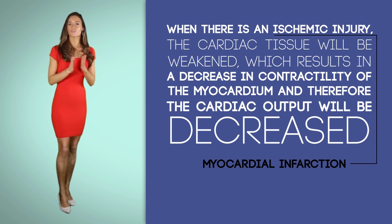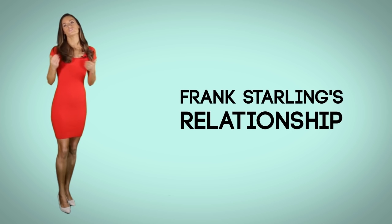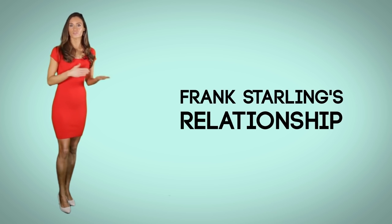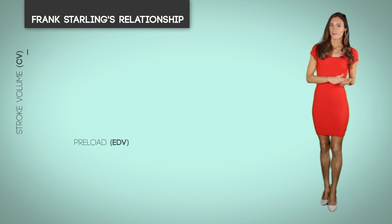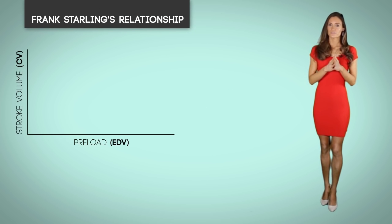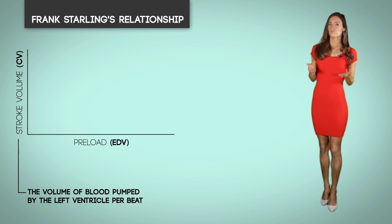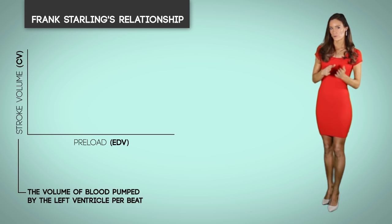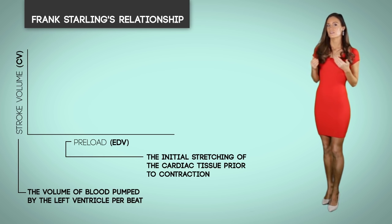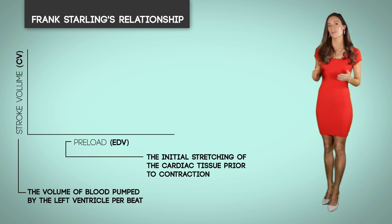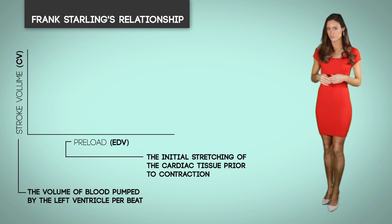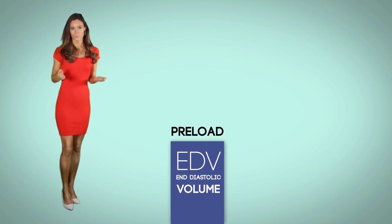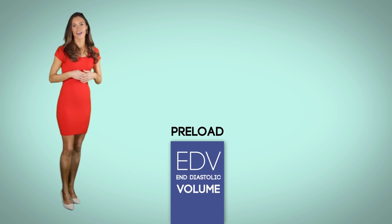We can look closer at this by examining the Frank-Starling relationship, which shows the relationship from stroke volume to preload. Stroke volume represents the volume of blood pumped by the left ventricle per beat. Preload represents the initial stretching of the cardiac tissue prior to contraction. A helpful tip: think of preload as stretch and afterload as squeeze. Preload is the end-diastolic volume, which may be abbreviated as EDV.